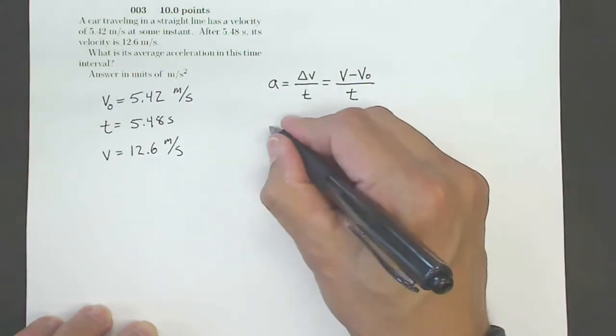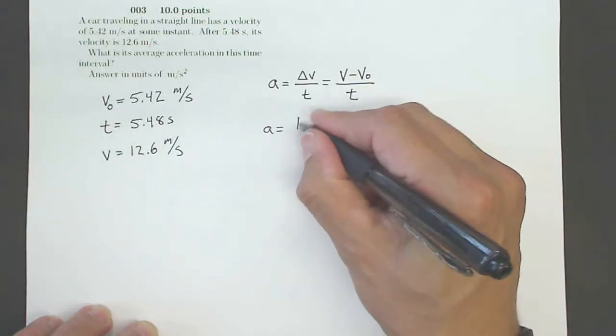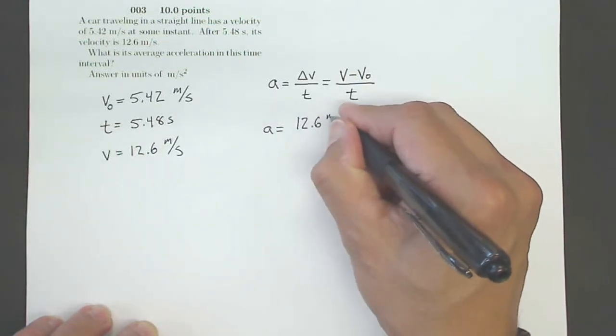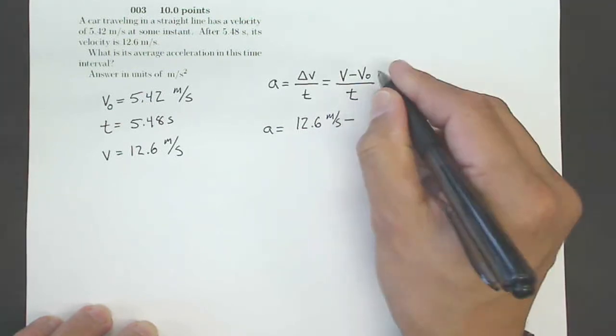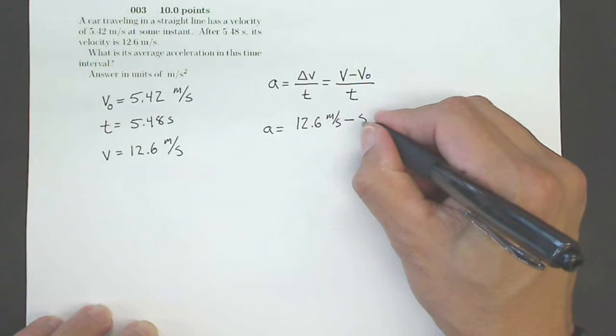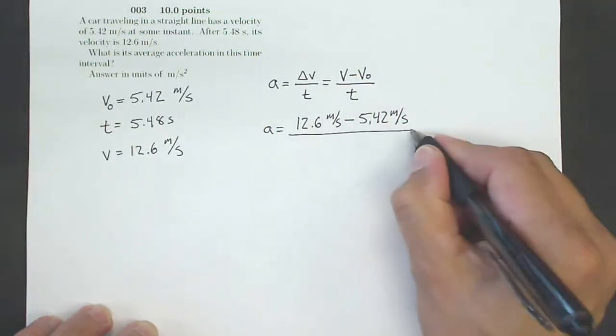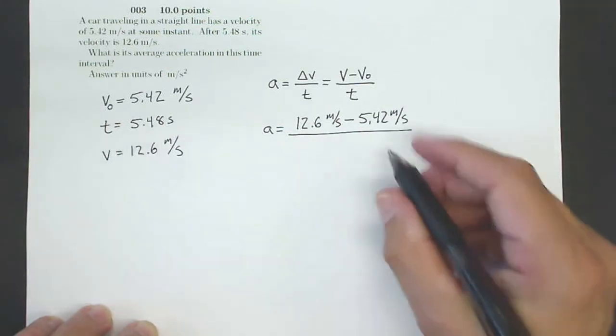In this case, my acceleration is going to be my final velocity V, that's 12.6 meters per second, minus my initial velocity V0, which is 5.42 meters per second, divided by the time 5.48 seconds.